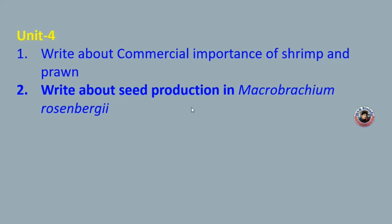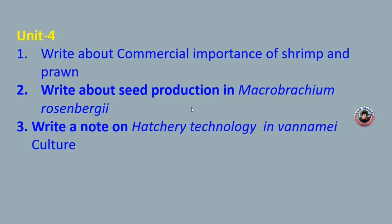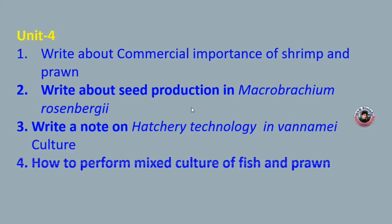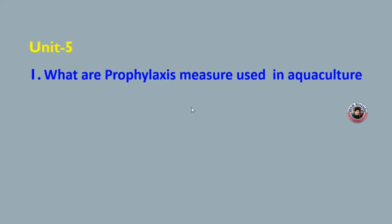Coming to unit four, the first question is: write about the commercial importance of shrimp and prawn. The second question is: write about seed production in Macrobrachium rosenbergii. The third question is: write a note on hatchery technology in penaeus culture. The fourth question is how to perform mixed culture of fish and prawn. The fifth question is: what are prophylaxis measures in aquaculture?